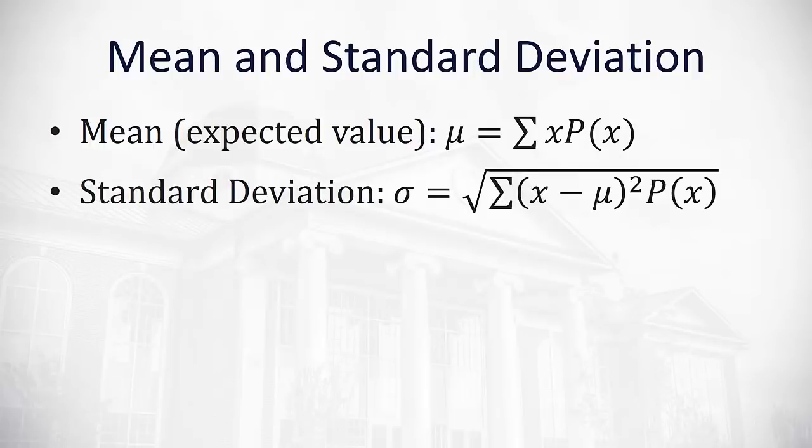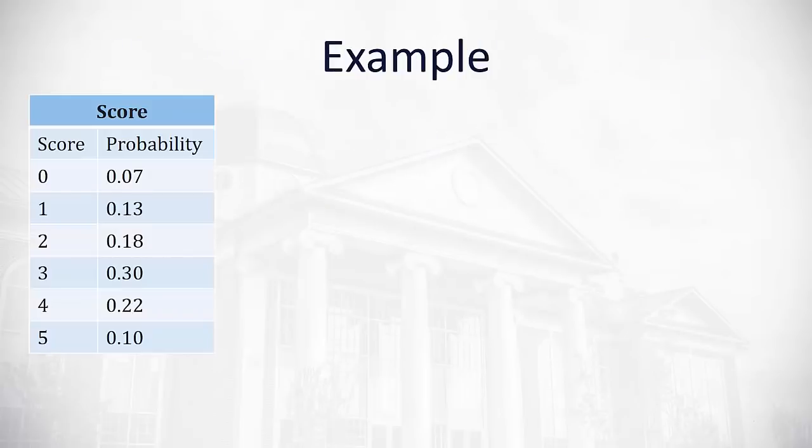For the standard deviation, we'll take the square root of the sum of the difference between the average and the data value squared times the probability. These formulas look a little complex, but really they're not too bad when we work through them one step at a time.